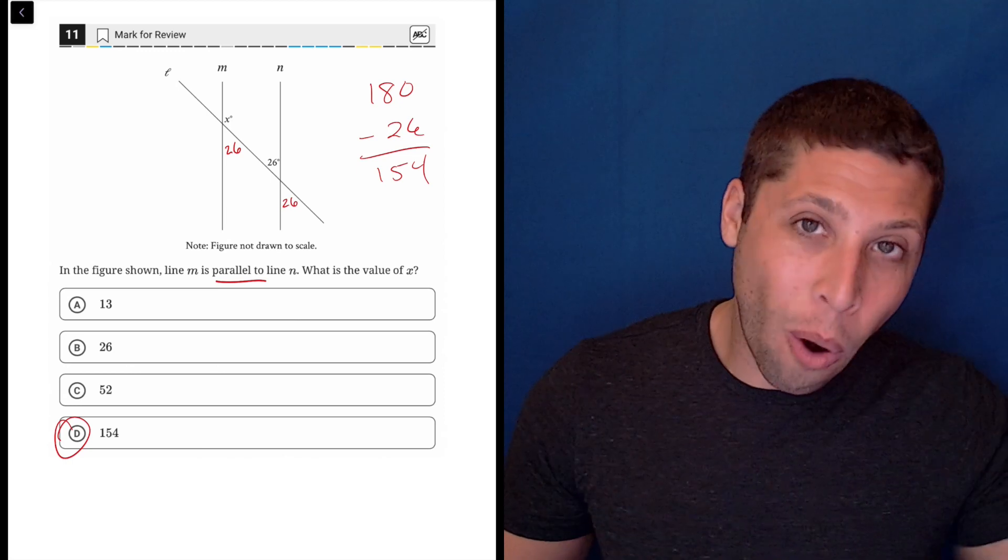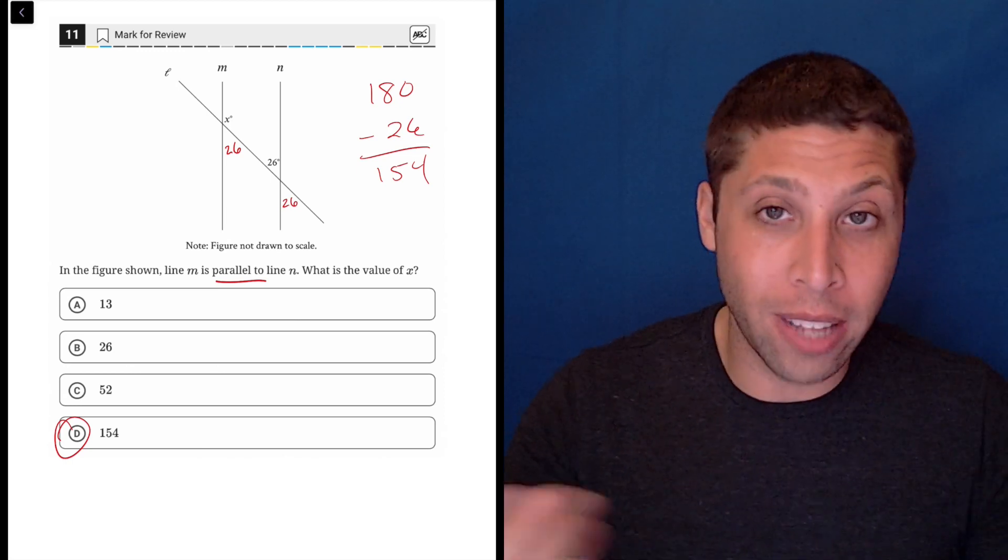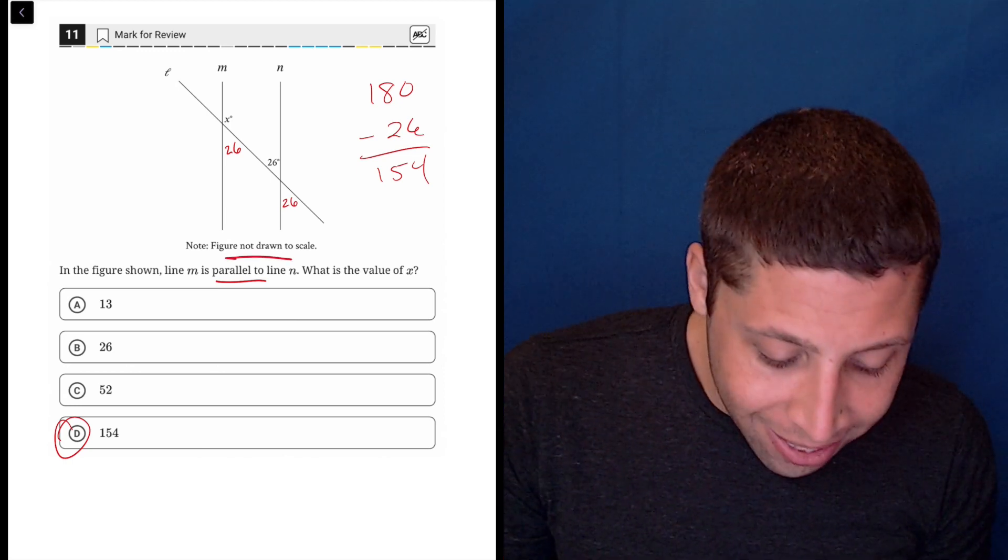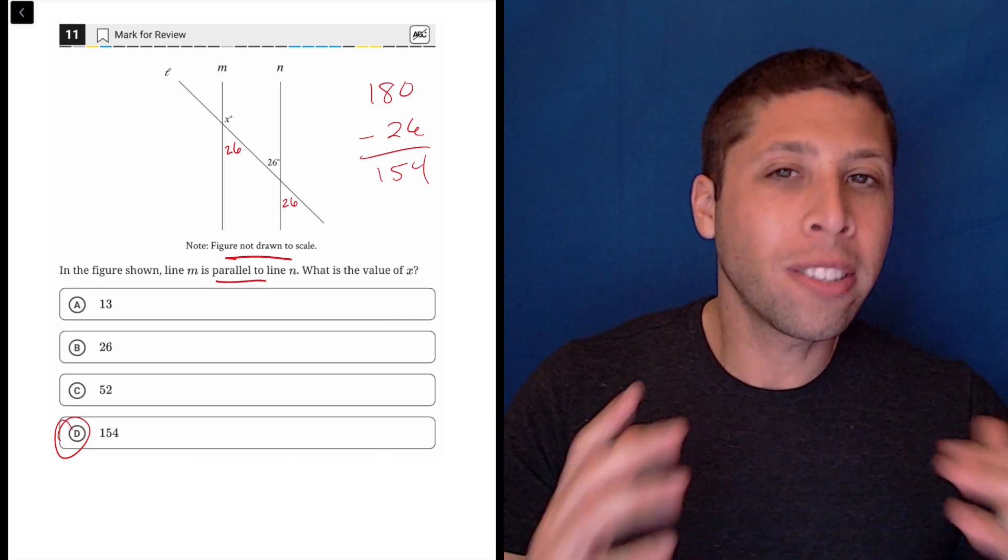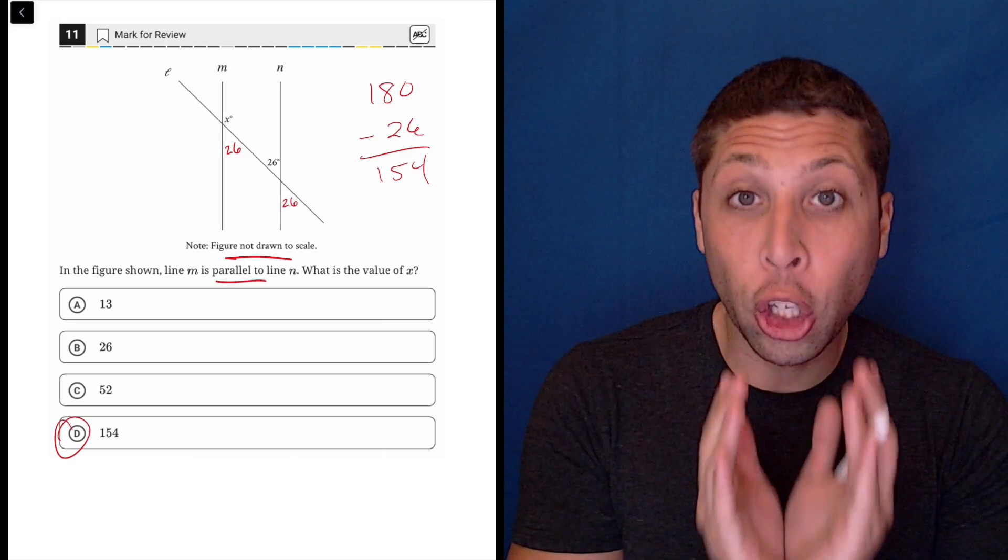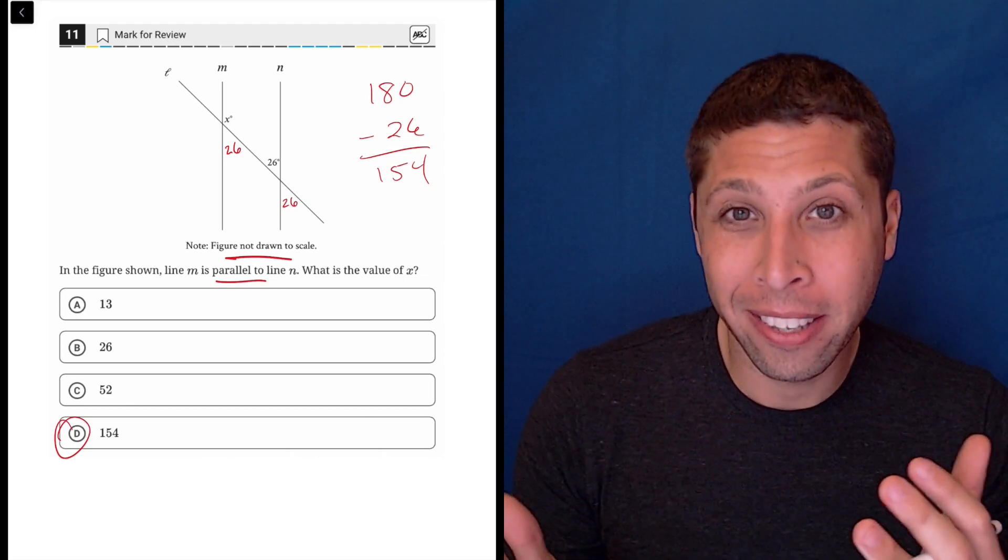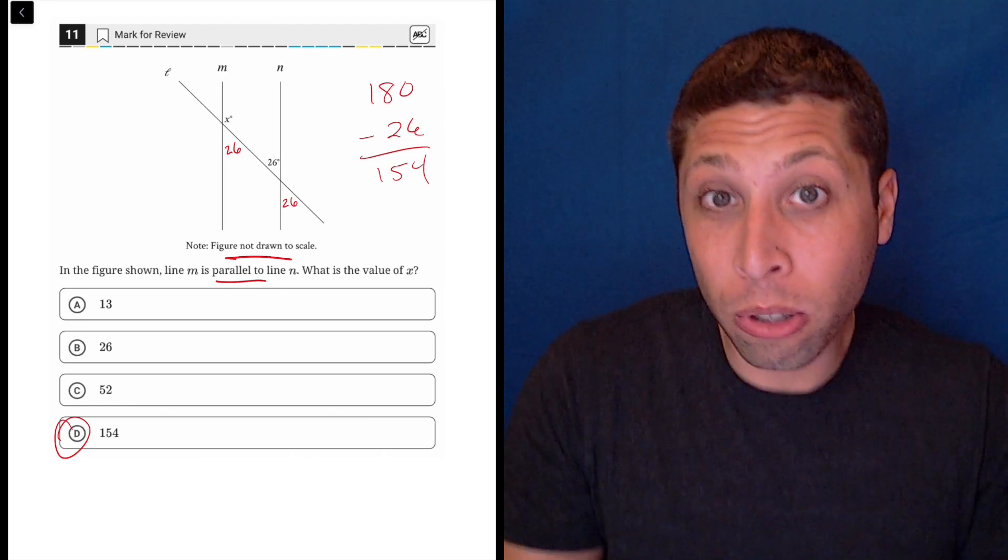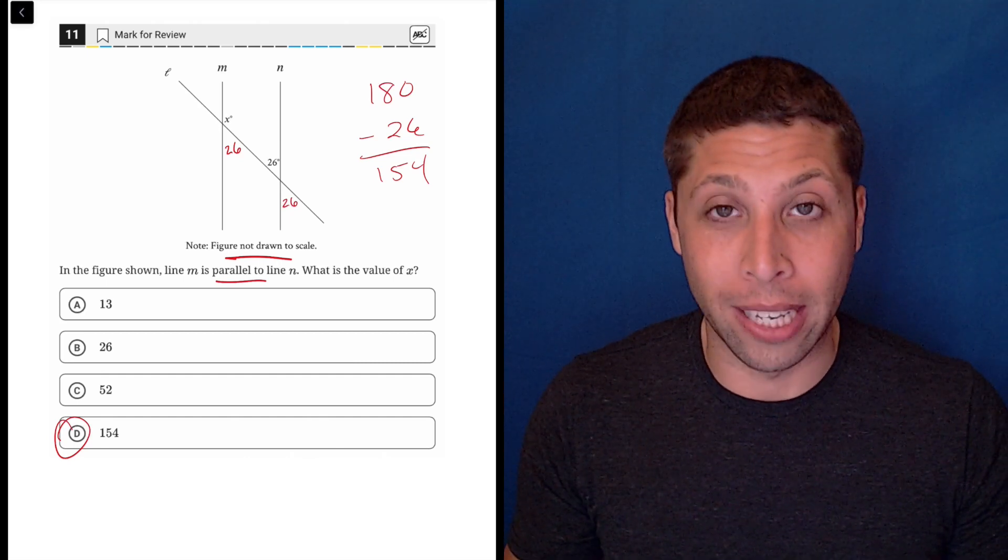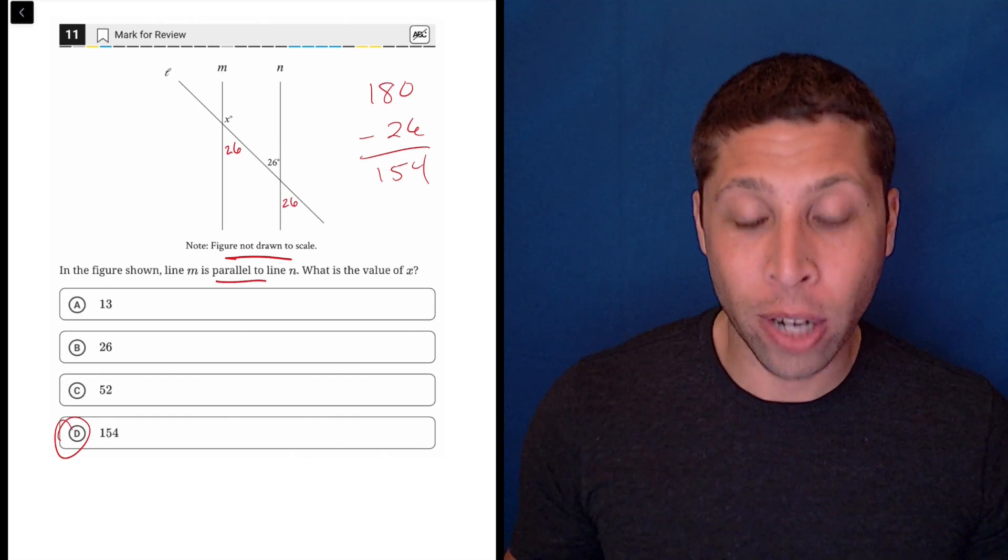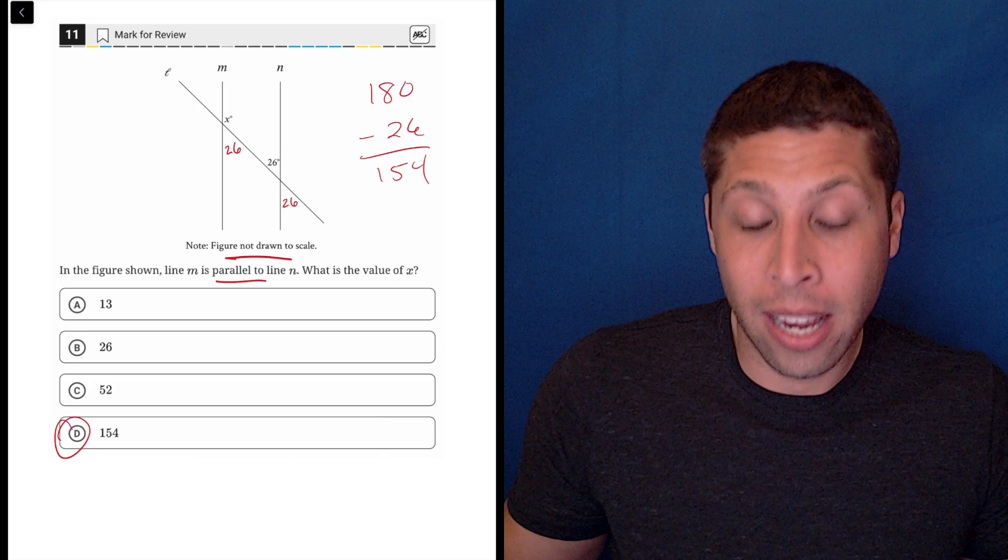Notice choice D is the only answer that's even greater than 90. I know they say it's not drawn to scale, but it's drawn to scale enough that the 26 is definitely an acute angle. If the 26 has to pair up with our X, we know we need an obtuse angle, an angle greater than 90 degrees, to match with it and make 180. So only one choice is greater than that.